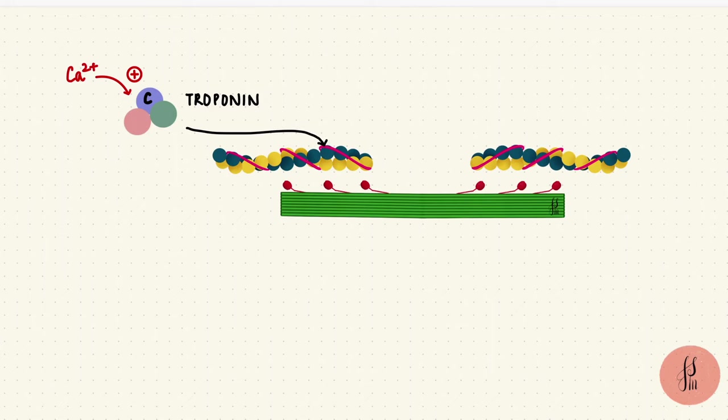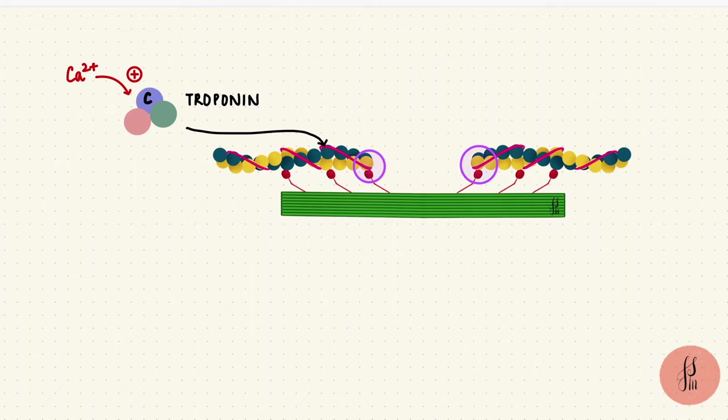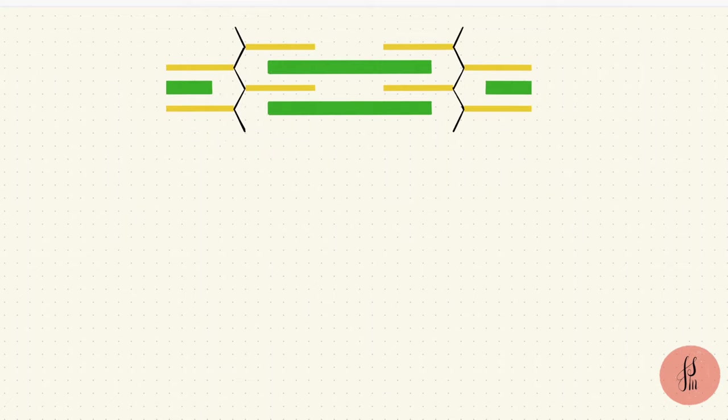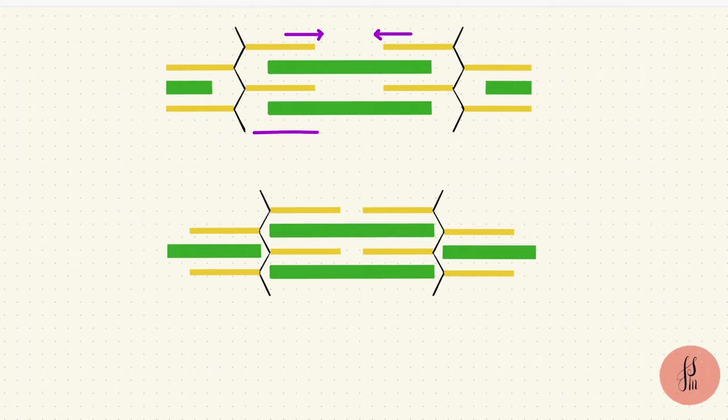The calcium binds to troponin C, which then moves tropomyosin out of the way, allowing myosin to bind to actin. Myosin has ATPase activity. The energy from breaking down one molecule of ATP causes the myosin head to bend at the hinge region, dragging the thin filament along with it. The thin filament sliding inwards shortens the sarcomere, causing muscle contraction.